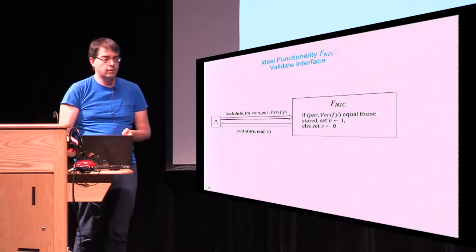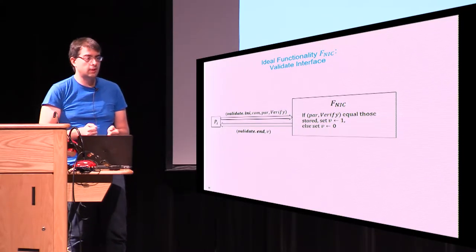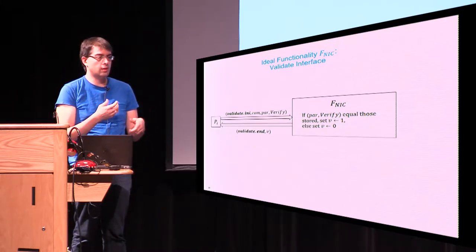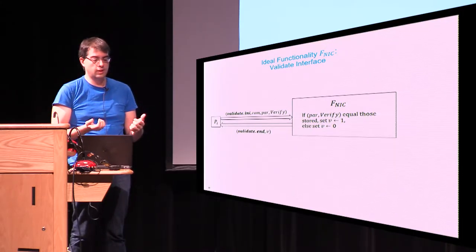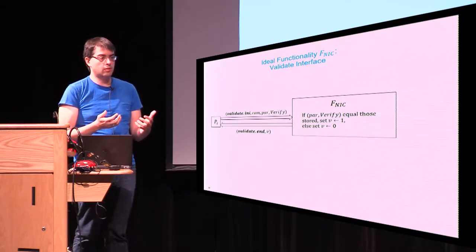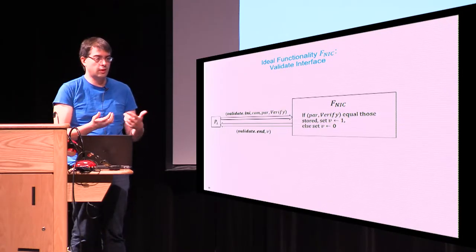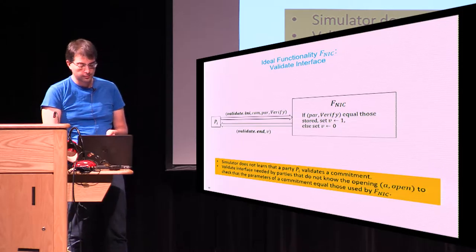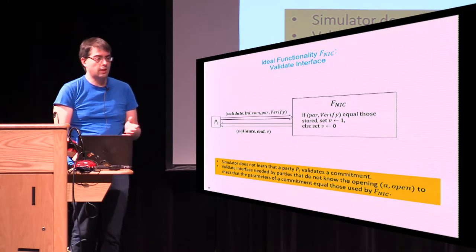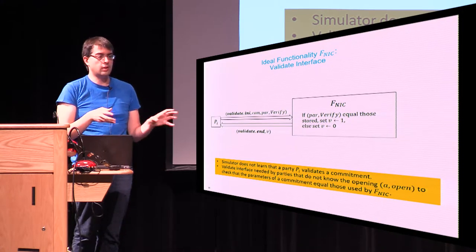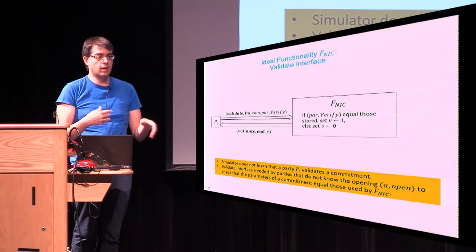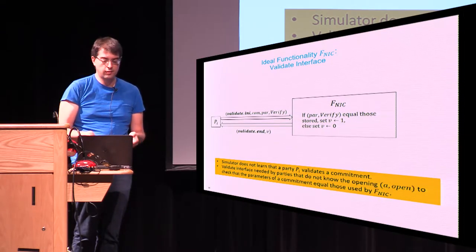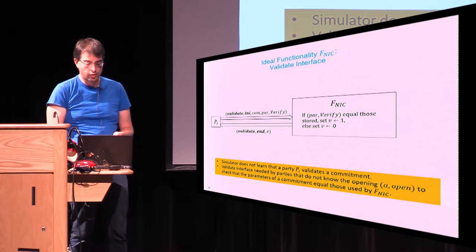Finally, we have a validate interface, used for a party that only has a commitment but not its opening, to check whether that commitment was computed with the same parameters and verification algorithm used by the functionality. Alternatively, we could make a functionality where those parameters and verification algorithm are output at setup, making the validate interface unnecessary. Both approaches work.